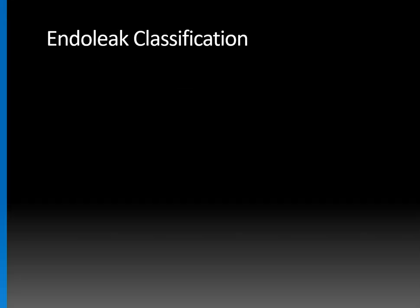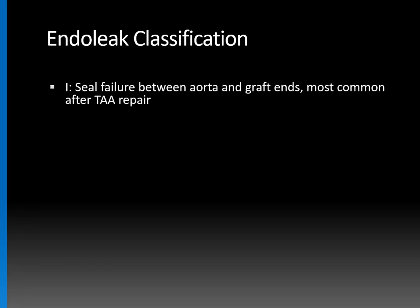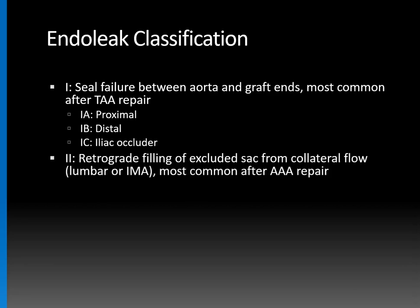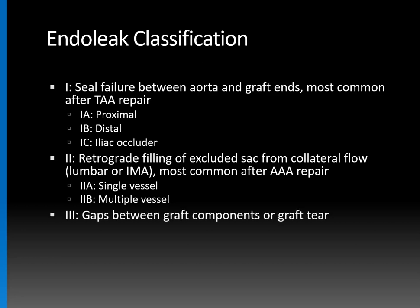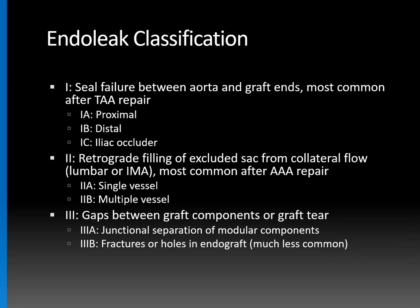The endoleak classification: Type 1 is seal failure between the aorta and graft ends — type 1a is proximal, type 1b is distal, and type 1c occurs at an iliac occluder. Type 2 is retrograde filling of the excluded sac from collateral flow — most commonly lumbar artery or inferior mesenteric artery — and is most common after abdominal aortic aneurysm repair. Type 2a involves a single vessel; type 2b involves multiple vessels. Type 3 involves gaps between graft components or tears — type 3a is junctional separation, type 3b is an actual fracture or hole in the endograft.